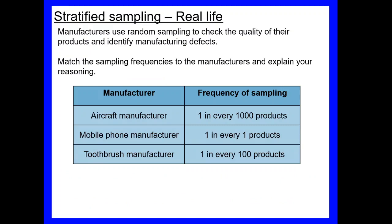Okay, so where might we want to use this stratified sampling in real life then? So manufacturers use a stratified sample to be able to check their different products. So we've got three different types of manufacture there and three different frequencies of sampling. You need to try to match the manufacturer with the frequency of sampling and you need to be able to explain your reasons. Pause the video now, have a go at that activity.